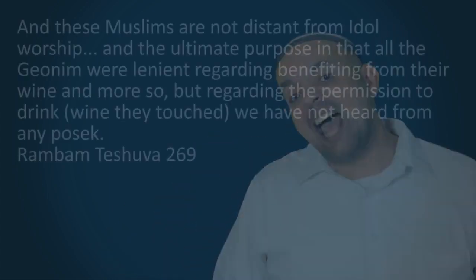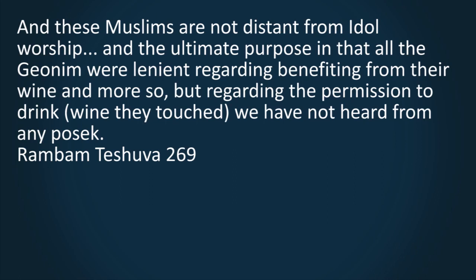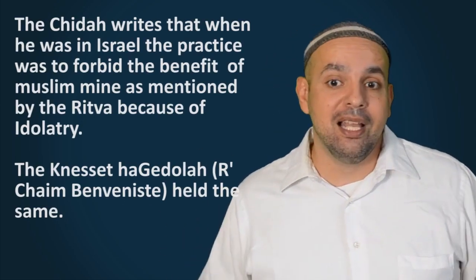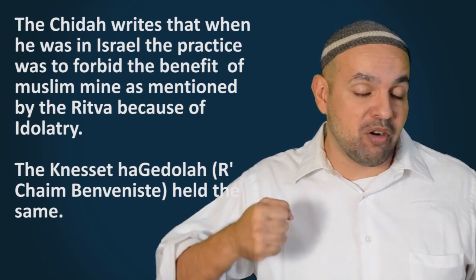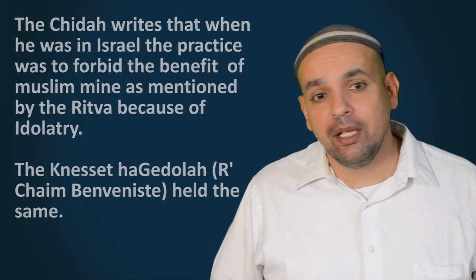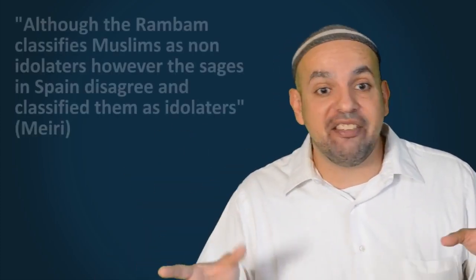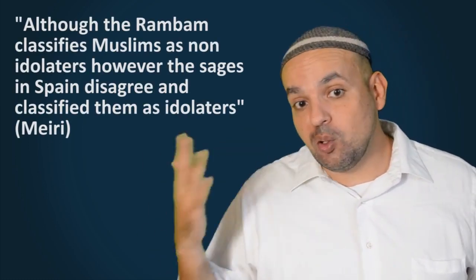Even though Rambam himself admitted to the fact that even according to his opinions, Muslims were not far from idolatry. He writes, and these Muslims are not distant from idolatry, and the ultimate purpose in that all the Geonim were lenient regarding benefiting from their wine. But regarding the permission to drink wine they touched, we have not heard from any posek. As per the Rashbam, Rashi holds that this leniency of the Geonim also included Christians.